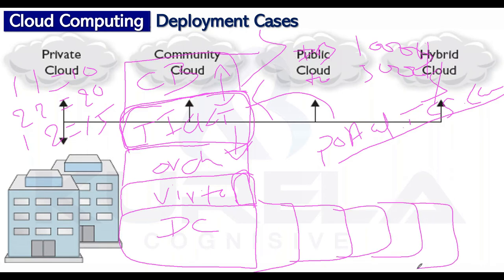You forward the bill to the respective department heads and ask them to pay it. As long as individual departments are paying, you have no problem extending capacity. Now department heads ask their teams to justify every server they need. Either you get the capacity back or you get the money — and you've regained control over your data center.